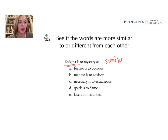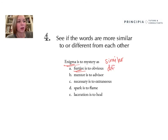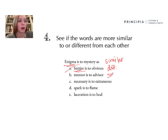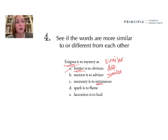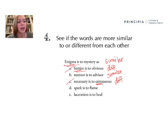A — furtive is to obvious. Maybe I don't know exactly what furtive means, but I think I've heard it in a negative context, which makes me guess that these are different — which is actually true. Furtive means very secretive, so those would be different. That means I can eliminate that option. B — mentor is to advisor. These are definitely going to be similar to each other. C — necessary is to extraneous. Even if I'm not 100% confident on the word extraneous, the extra- root gives me a hint that these are going to be different — and they are. Extraneous means extra; it's not necessarily stuff that's necessary. So I can eliminate that option. D — spark is to flame. These two are definitely going to be similar; they happen in similar contexts, so I'll leave that.